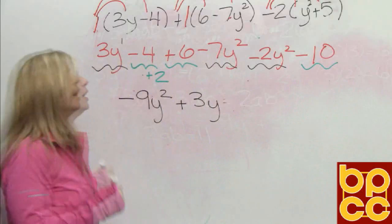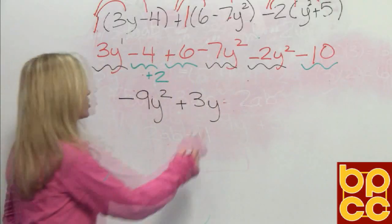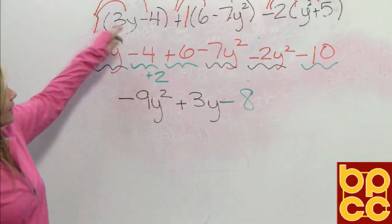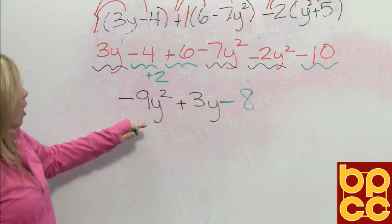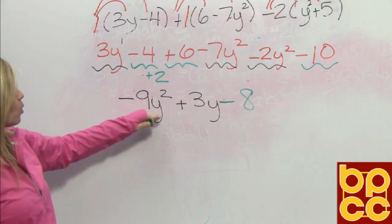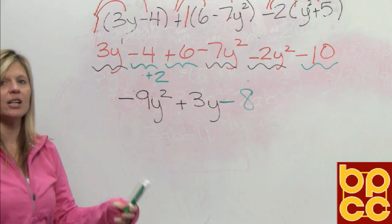Again, we would subtract because of different signs, give the sign of the larger. That would mean negative 8. So when we take this polynomial expression and put all the like terms together, our answer would be negative 9y squared plus 3y minus 8. And we are in the correct descending order.